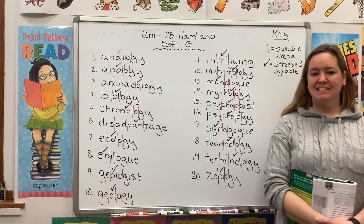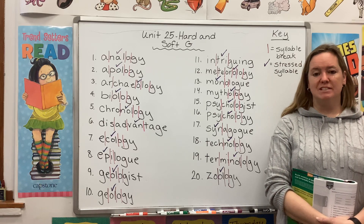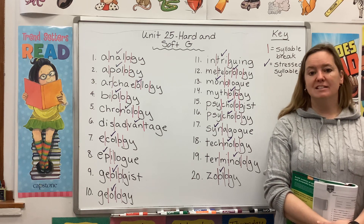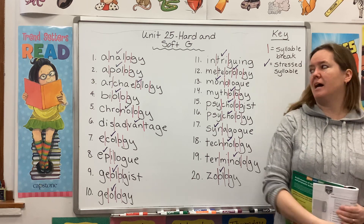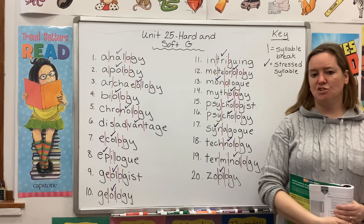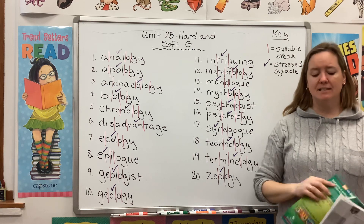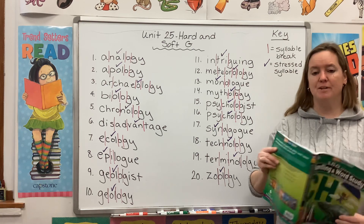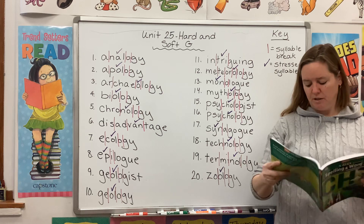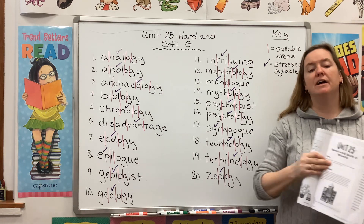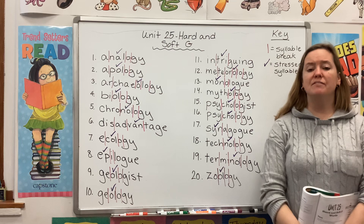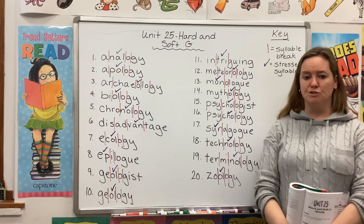Hi guys, welcome back to Spelling and Word Study. My name is Mrs. Rhodes and I'm here to get you started on Unit 25 Hard and Soft G. Please take a second to gather your materials. You will need your green book open to page 155. You will also need some colorful pens, markers, or crayons.